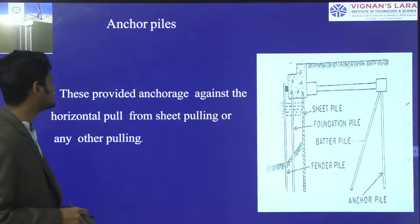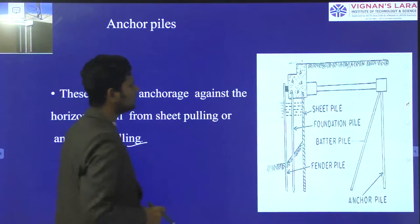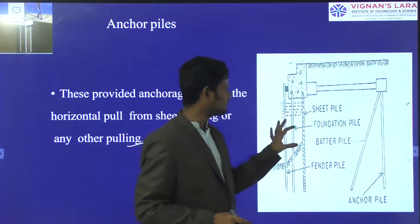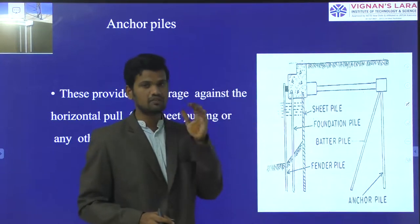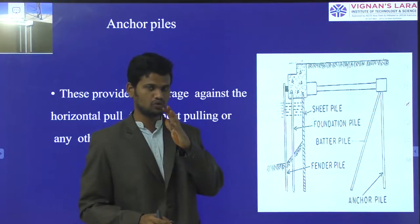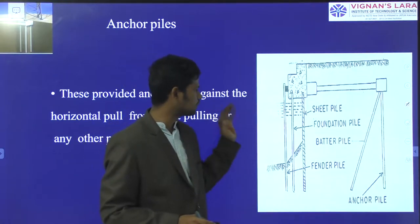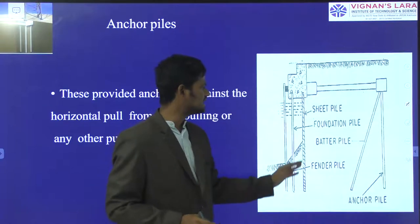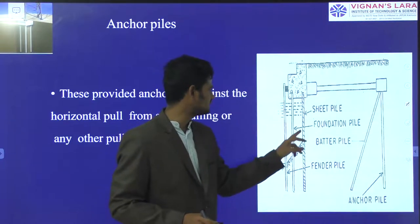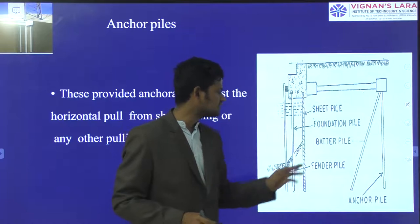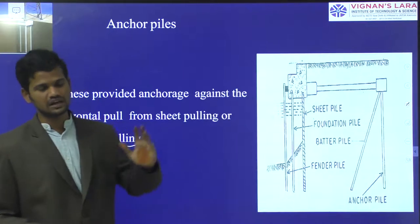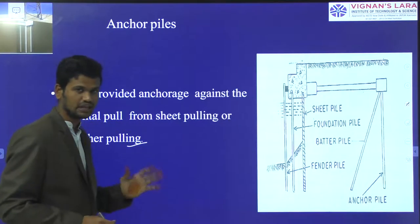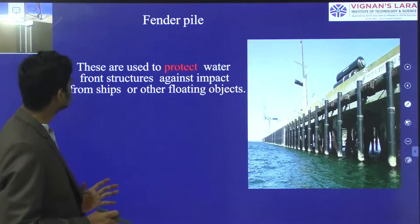Next, anchor piles. These provide anchorage against the horizontal pull from sheet piling or any other pulling structures. In some construction types, before constructing the structure, some elements may apply horizontal pull. To resist these pulls, we provide sheet pile. The foundation pile and sheet pile together with batter pile — where inclination is provided — resist horizontal pulls or inclined water forces.